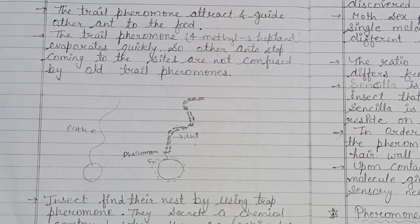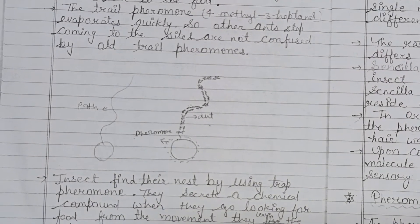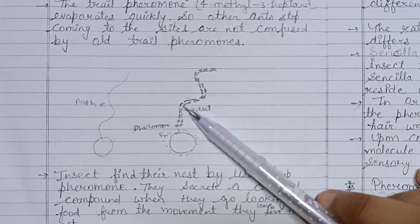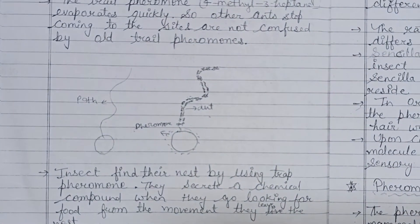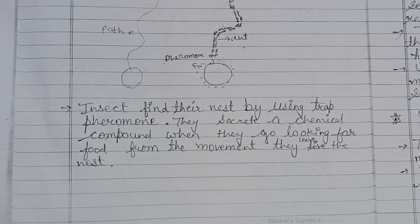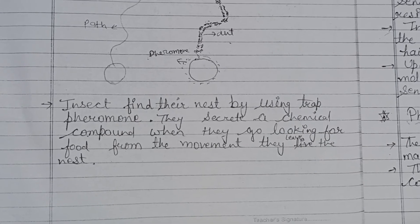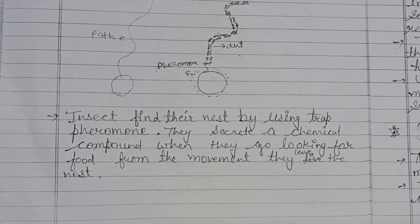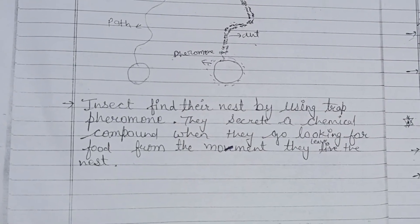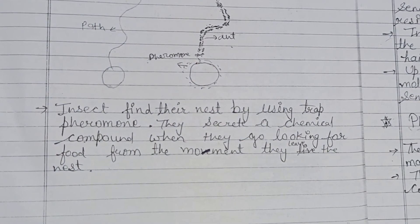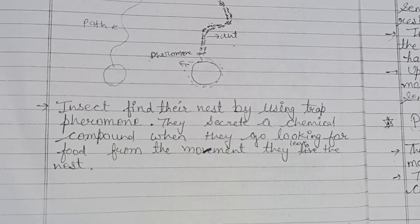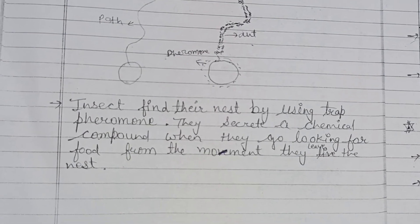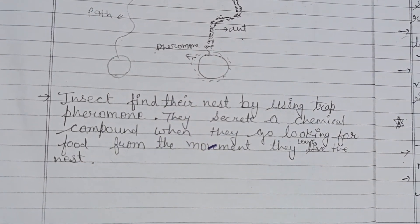A diagram represents the path and pheromone released by ants, who follow directions according to the pheromone. Insects find their nest using the trail pheromone — they secrete a chemical compound when leaving the nest to look for food, allowing them to relocate the nest easily. Similarly, female mosquitoes use CO2 to locate breathing animals by targeting locations with high CO2 concentration to find blood donors.